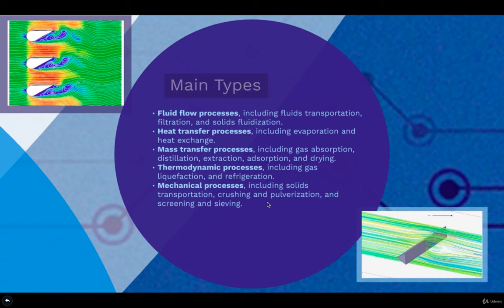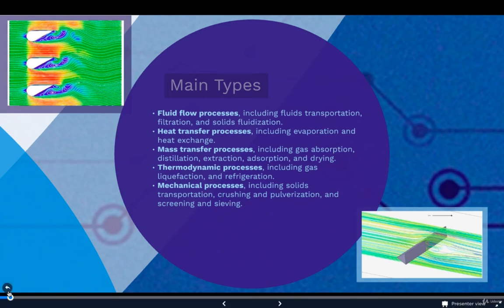Then we have the mechanical process which includes transportation, crushing, pulverization and sieving. This is most likely used in process engineering or mechanical engineering. Chemical engineers do it as well but because there are not that many chemicals involved, this is essentially solids manipulation. This is not that used in chemical engineering even though a chemical engineer can do it.